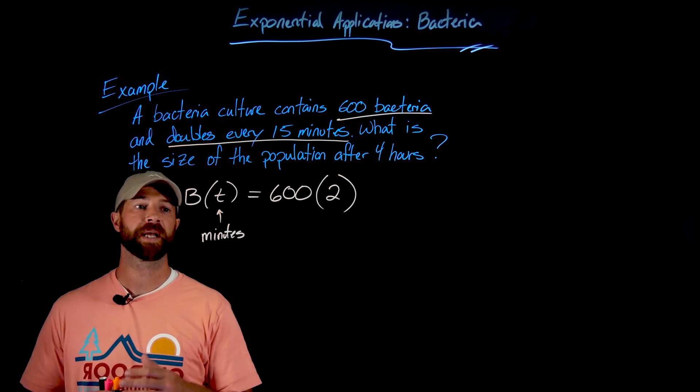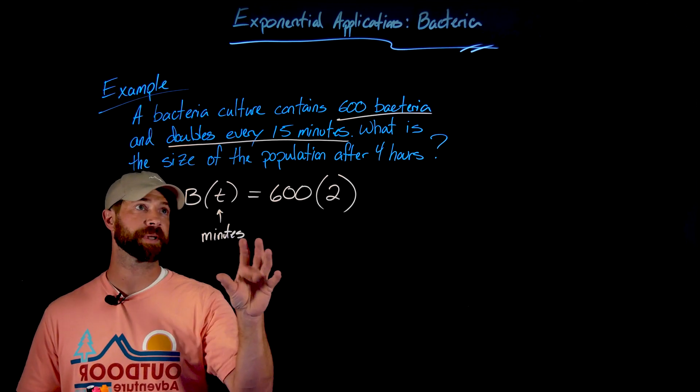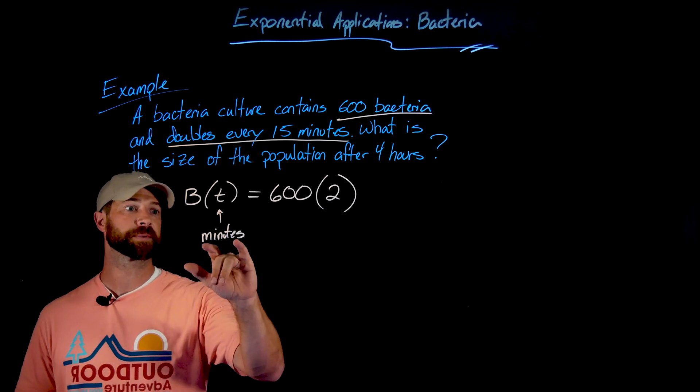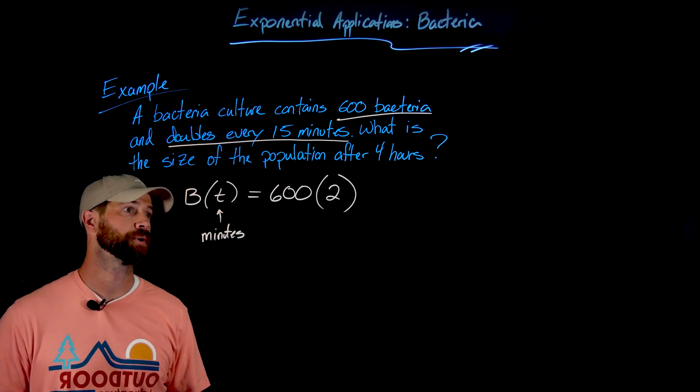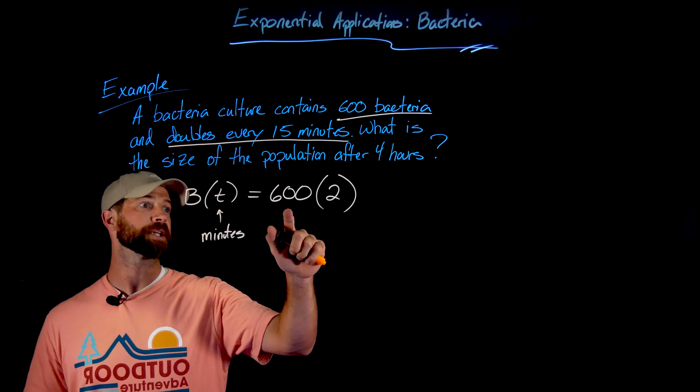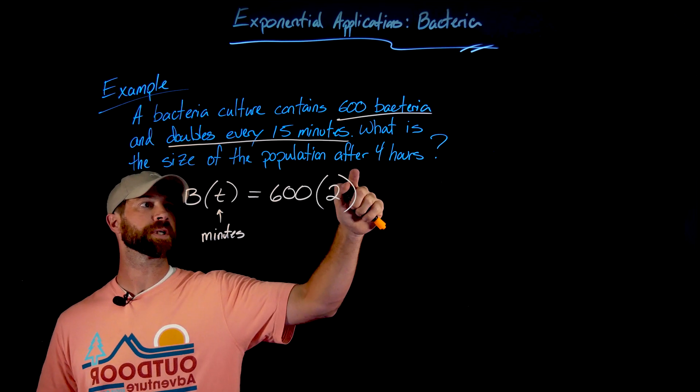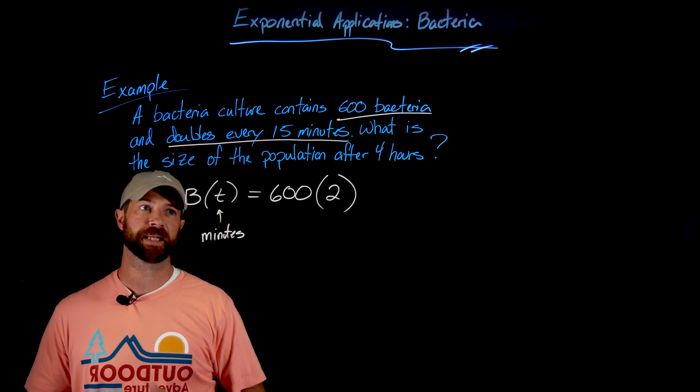All right, so if we took this information and wanted to then write an exponential model for the population size of this bacteria, but now in terms of minutes as our time that we'll use to input here—the important thing here is we're now starting with 600 still, we're doubling still, but now we're doubling every 15 minutes.